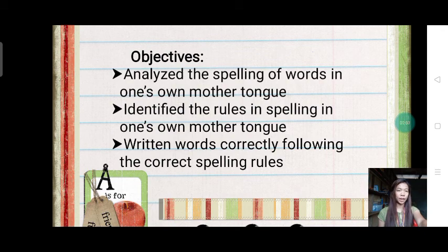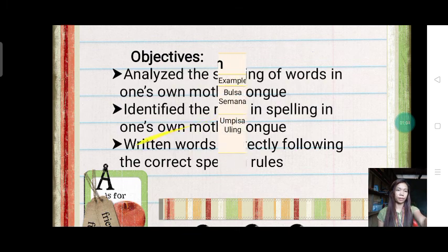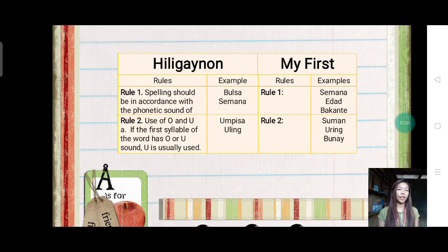I have here the spelling rules used in Hiligaynon and our own first language. The first rule is spelling should be in accordance with the phonetic sound. In Hiligaynon we use the example busa and simana. Since simana has the same meaning with our first language, I use it also as an example.